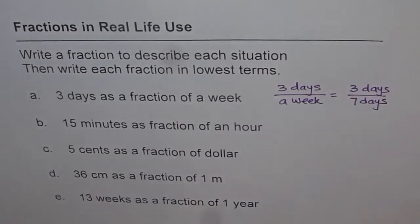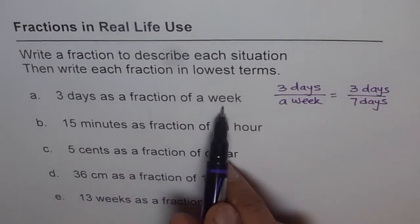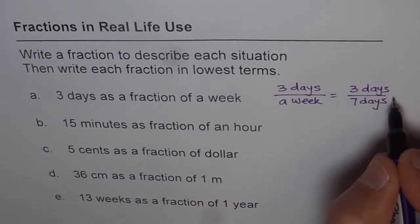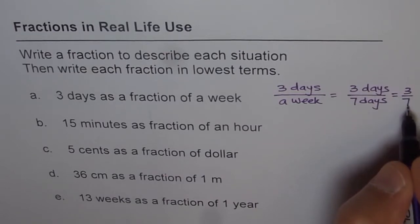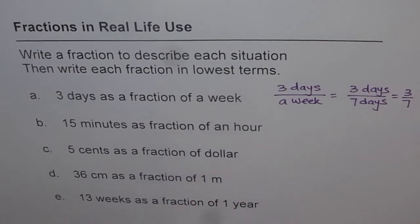So we can write this as 3 days over 7 days. So that becomes a fraction which represents days in weeks, right? Now you can simplify. Days and days will cancel out, and you get a fraction 3 over 7. So 3 over 7 represents 3 days as a fraction of a week. So that is how we will do these questions.